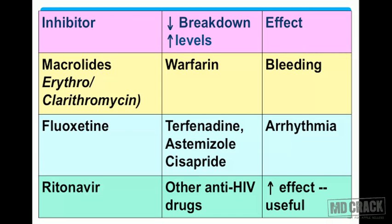The second classical example: an SSRI, selective serotonin reuptake inhibitor — fluoxetine — can inhibit the metabolism of terfenadine, astemizole, and cisapride, and these drugs are likely to precipitate cardiac arrhythmia.